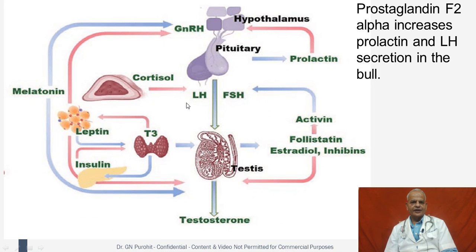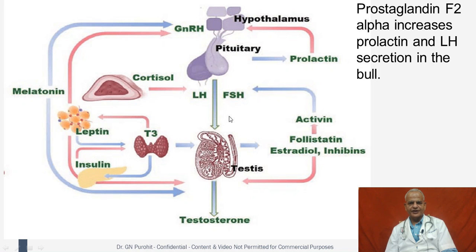Many cues regulate the secretion of gonadotrophins in the male, including photoperiod, which affects melatonin secretion. Leptins also affect GnRH, and the thyroid regulates insulin — all collectively having regulatory effects on GnRH, LH, and FSH secretion. Prolactin also regulates the secretory activity of hormones in male domestic animals. There are also reports of follistatin, activins, estradiol, and inhibins regulating the secretion of follicle stimulating hormone.